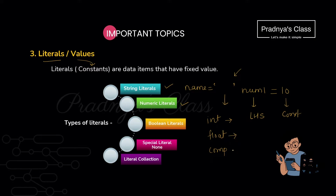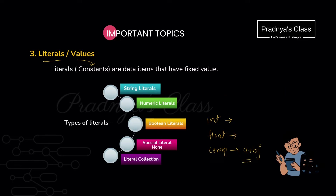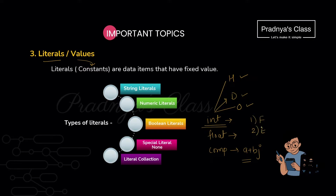The second type of literal is numeric literal. When we talk about numbers there are three types: integer, float, and complex. Integers are numbers without a decimal point. Floats are numbers with a decimal point, and complex numbers follow the pattern a plus bj in Python. For integers we have different representations: decimal integer literals, octal, and hexadecimal. Float numbers can be represented in two types: fractional form and exponent form.